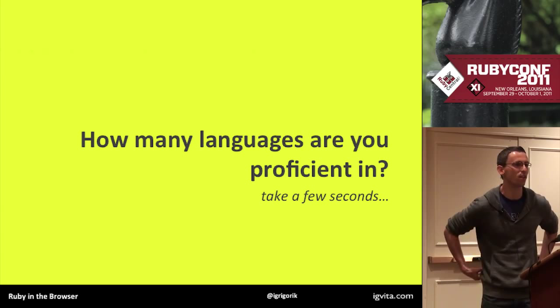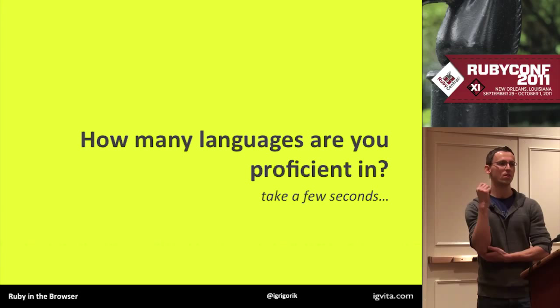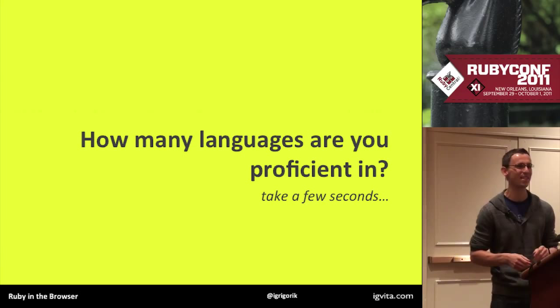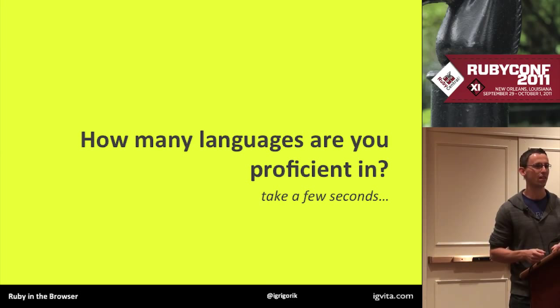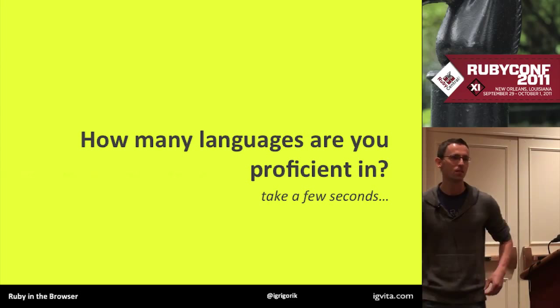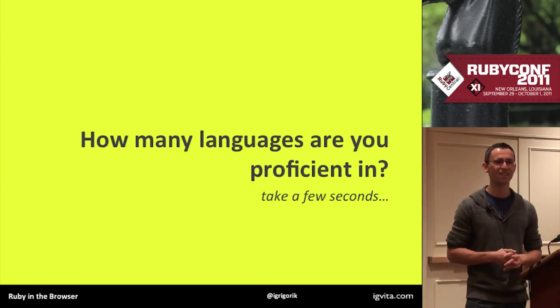Three - drop your hand if it's less than three. Four, five, six, seven, eight, nine, ten, eleven. Okay, we got ten. What are some of those ten, just out of curiosity? No Python allowed. Okay, so that's a good sample.